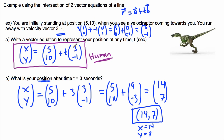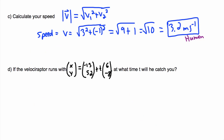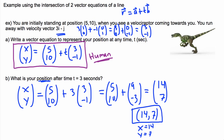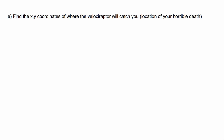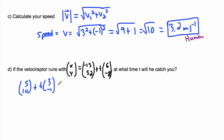We have the human's equation: (5,10) + t(3,-1) set equal to the velociraptor's equation: (-13,52) + t(6,-8). In some complicated examples the two equations might use different time parameters, but in this case it's straightforward — there's just one time t, and we want to solve for it.